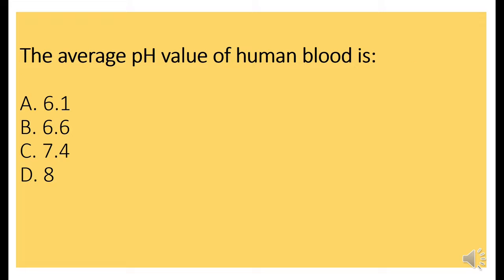Next question. The average pH value of human blood is. The answer is Option C, 7.4.